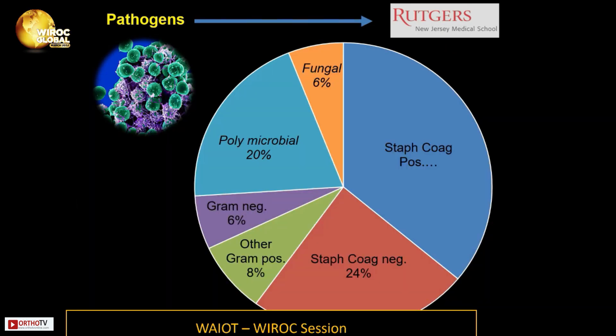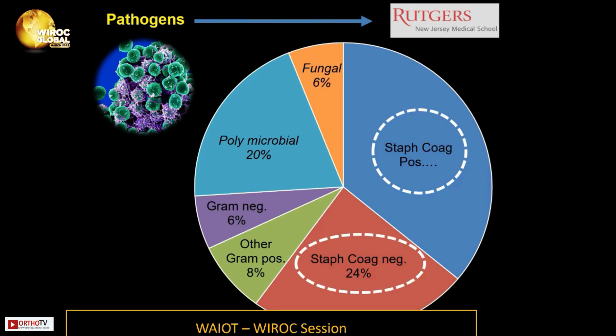In our practice, the most common pathogens are Staph coagulase-positive at 36 percent, coagulase-negative at 24 percent, and polymicrobial organisms making up to 20 percent of cases.